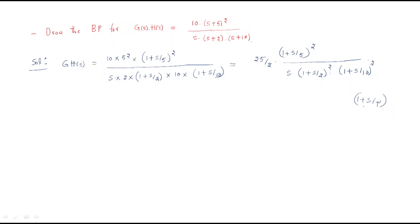Hello everyone. Last session we stopped this problem here. In this session we will complete it. The problem is, given the finite poles, we have to draw the Bode plot, so we are converting into the standard format: 1/(1 + s·τ) form.